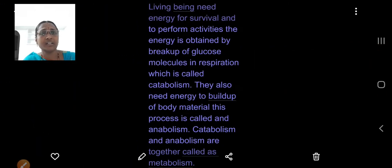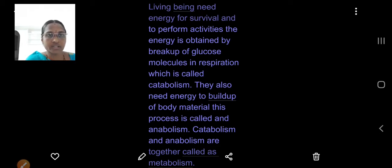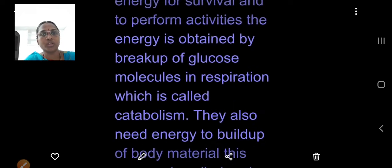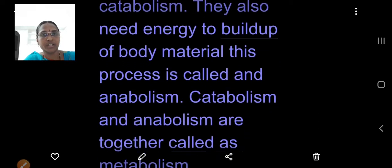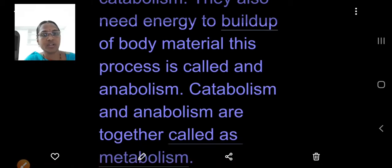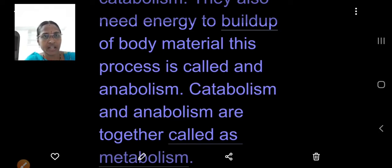Living organisms require energy for survival, for the build-up of their bodily proteins. This process is called anabolism. They also need energy to perform certain activities, which is obtained by the breakup of glucose molecules — for example in respiration. This process is called catabolism. Catabolism and anabolism together are called metabolic activities or metabolism.